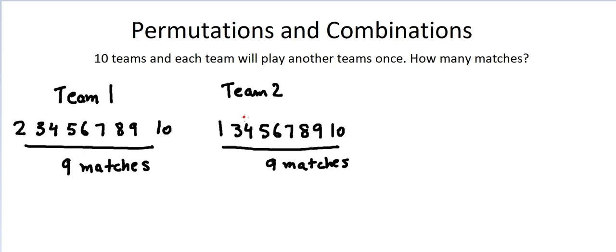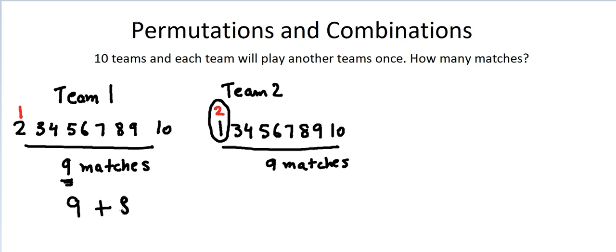You can see that team two has played with team one — that's match two-and-one. But we already counted that same match as one-and-two in team one's nine matches. So we cannot count it again. That means for team two, we only count eight new matches, not nine. So the running total becomes nine plus eight.